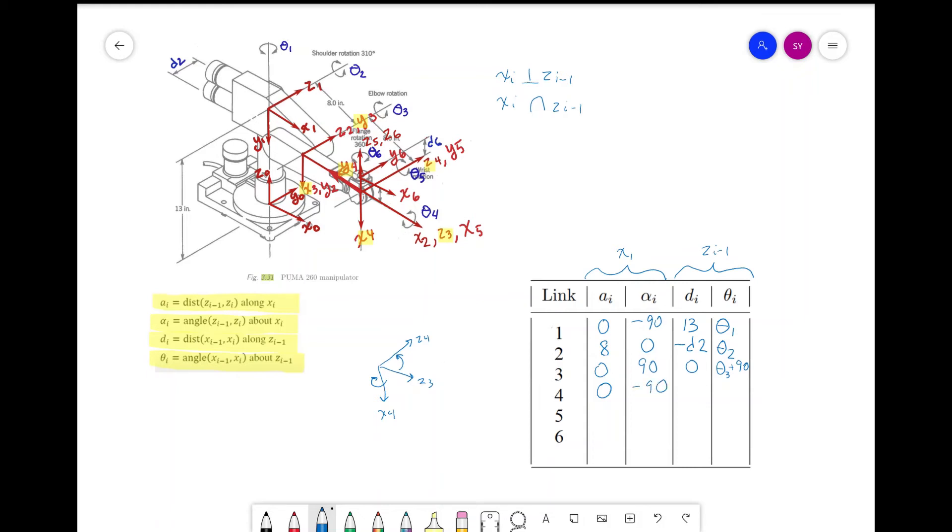Now for d, we see that there's a distance of 8 here. And then for theta, we have a joint rotation of theta_4 we need to account for, and x3 and x4 are already aligned.